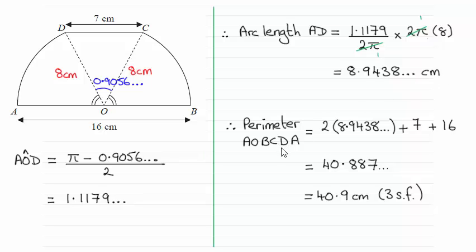When it comes to working out the perimeter of the scraper, we've got 2 lots of the arc length, and then we've got plus the 7 and plus the 16 on the bottom here. That comes to 40.9 centimeters when rounded to 3 significant figures.